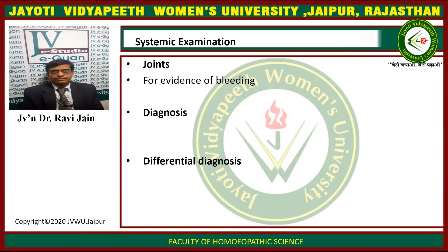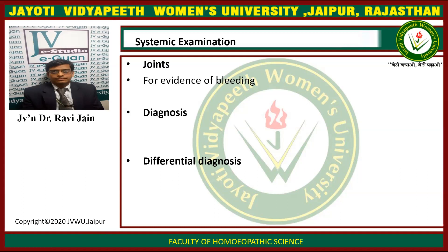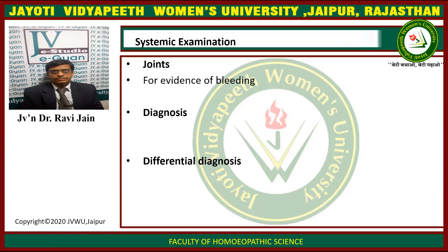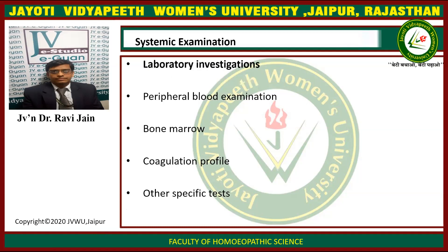In the joints, look for any evidence of swelling, deformity, or joint implants. After performing all these examinations, give a probable diagnosis for the condition, then give the differential diagnosis, and other related clinical conditions resembling the present condition. Then perform certain lab investigations to complete the diagnosis.